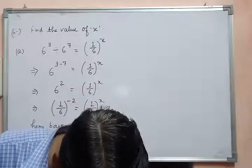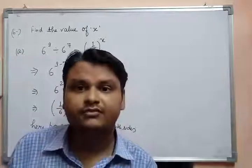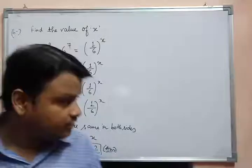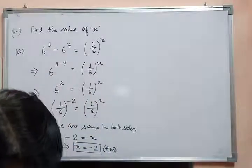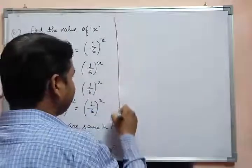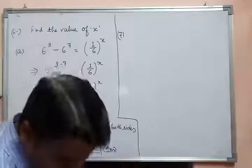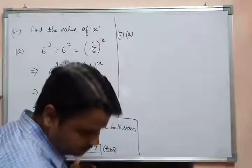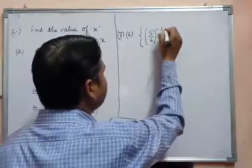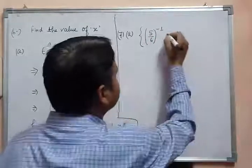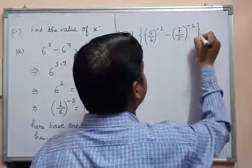For parts B and C of question 6, both questions are of the same type, so apply the same steps to solve them. Now moving to question number 7. In question 7, you have to simplify. Question 7A is: 5/6 in curly brackets — (5/6) to the power minus 1 minus (7/5) to the power minus 1 — to the whole power minus 1.